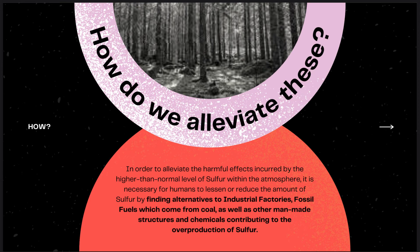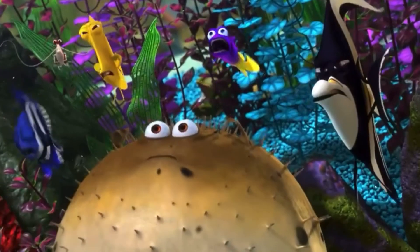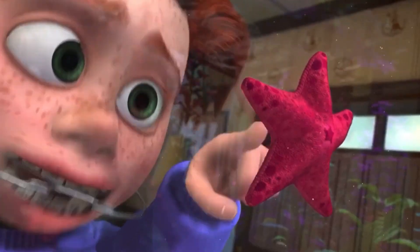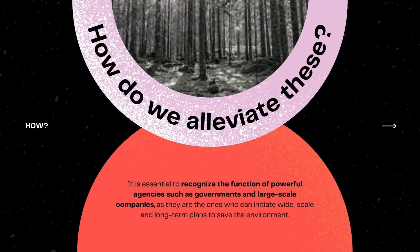In order to alleviate the harmful effects incurred by the higher-than-normal level of sulfur within the atmosphere, it is necessary for humans to lessen or reduce the amount of sulfur by finding alternatives to industrial factories, fossil fuels which come from coal, as well as other man-made structures and chemicals contributing to the overproduction of sulfur. Natural scientists have concurred that the depletion of our environment has always been a people problem, because societal patterns cause environmental problems, society is heavily affected by these, and it takes major collective action to alleviate them.